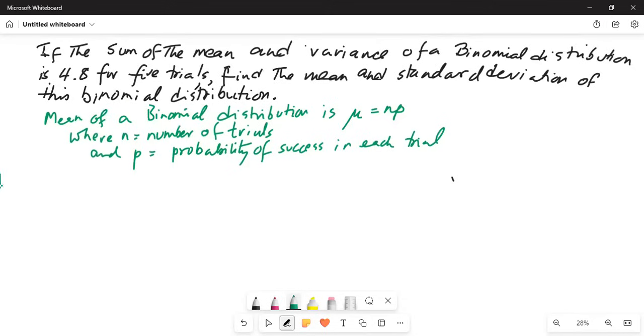Variance of a binomial distribution is sigma square, which is n times p times 1 minus p.